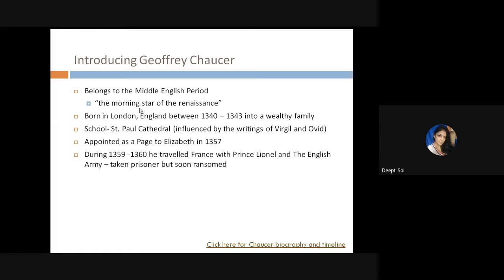At around age 19, after two years, he traveled to France with Prince Lionel and the English army, where he was taken prisoner but soon ransomed. Chaucer was clearly highly valued by the royal family — King Edward's court paid a ransom of about 16 pounds for his release. In that era, a single pound could sustain an ordinary man for six months, so this was a huge sum, indicating just how much Chaucer was valued at court.